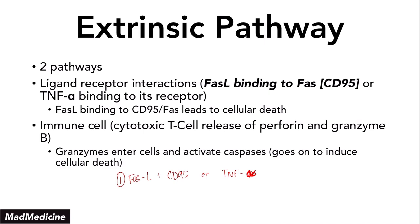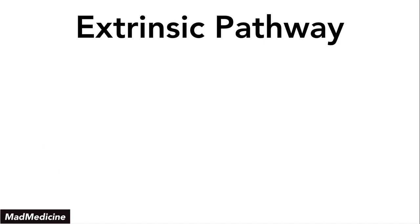TNF-alpha binding to its receptor will lead to apoptosis. Or you have the granzyme-mediated pathway. Granzymes get in through perforin — perforin will perforate the cell membrane, essentially creating a hole for the granzyme to enter. That's why they're called perforins. This is very important because the FAS and FAS-ligand pathway plays a huge role in the development of certain parts of our immune system.